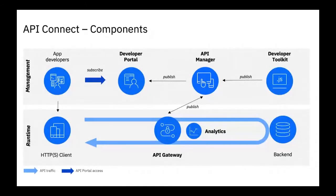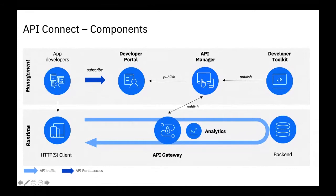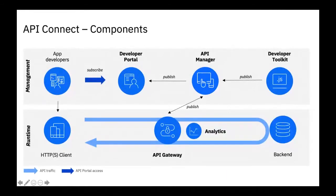Let me quickly start off by sharing our API Connect components. The typical API management solution would have a developer portal, an API manager, a toolkit for developers to build their APIs, an analytics part, and of course it integrates with the gateway at runtime. At runtime, your HTTP client connects to the gateway to do policy validations, security checks, and then goes to the backend to consume the data and push it back to the HTTP client. In the meantime, the gateway pushes analytics into the analytics component, and you'll get to see via a dashboard in the API manager the usage of the APIs and certain latencies.